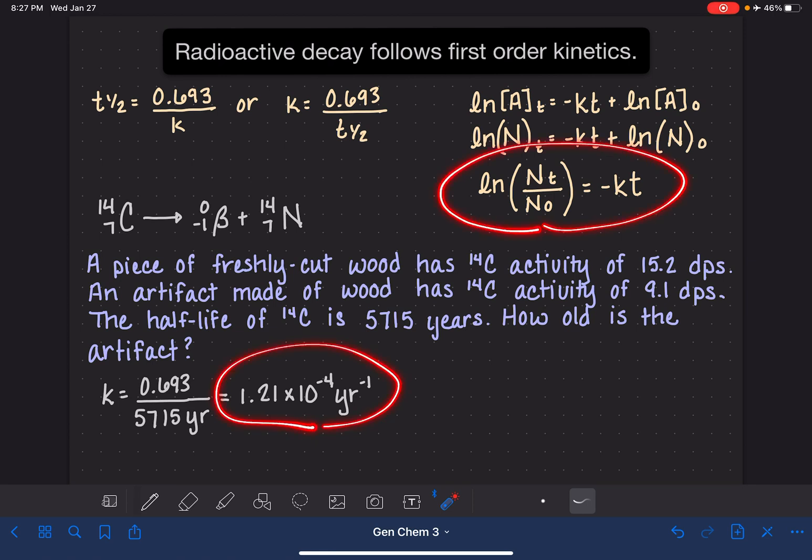Going back to this equation right here. And so we know k, and t is what we're trying to solve for. So what are we going to plug in here for the amount at time t and the amount initial? That information is going to be coming from our disintegration per second numbers. We're going to use that in place of the quantity or the concentration.